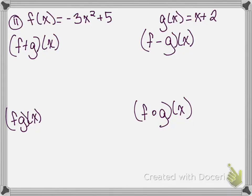We are starting with number 11 in this video. Number 11 reads: if f of x equals negative 3x squared plus 5, and g of x equals x plus 2, we are going to find each of the following. The first thing we're going to do is find f plus g of x, which means we are going to add f of x and g of x together.